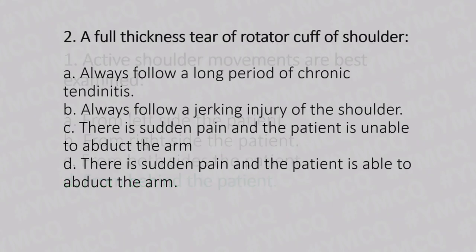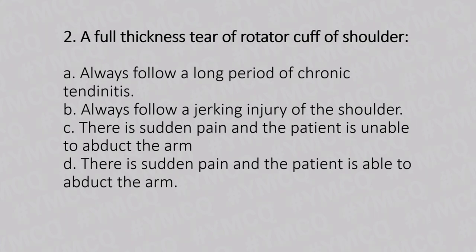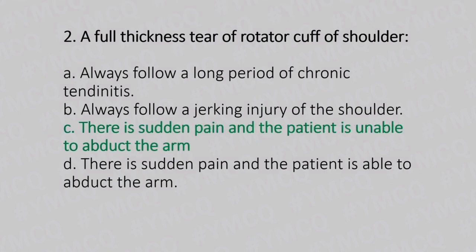Now let's move to question number 2. A full thickness tear of the rotator cuff of the shoulder. Option A: always follows a long period of chronic tendinitis. Option B: always follows a jerking injury of the shoulder. Option C: there is sudden pain and the patient is unable to abduct the arm. Option D: there is sudden pain and the patient is able to abduct the arm. And the answer is Option C, there is sudden pain and the patient is unable to abduct the arm.